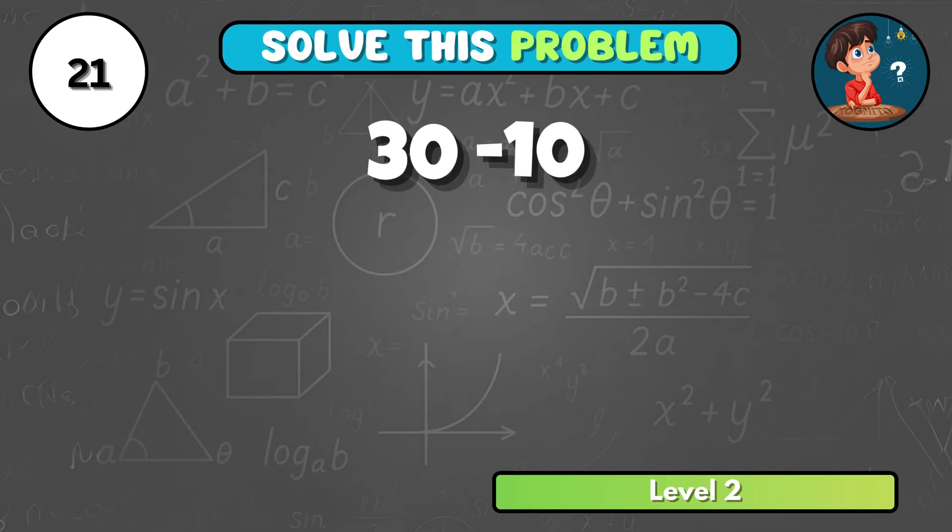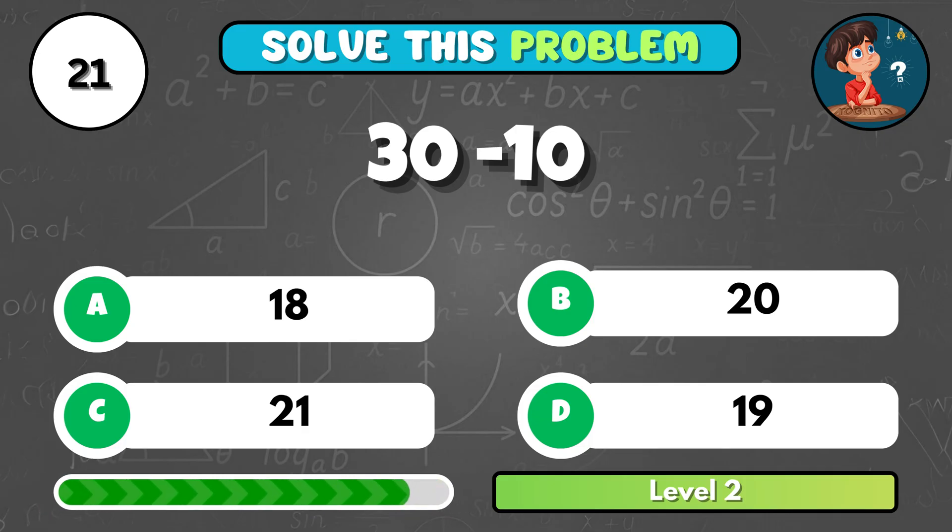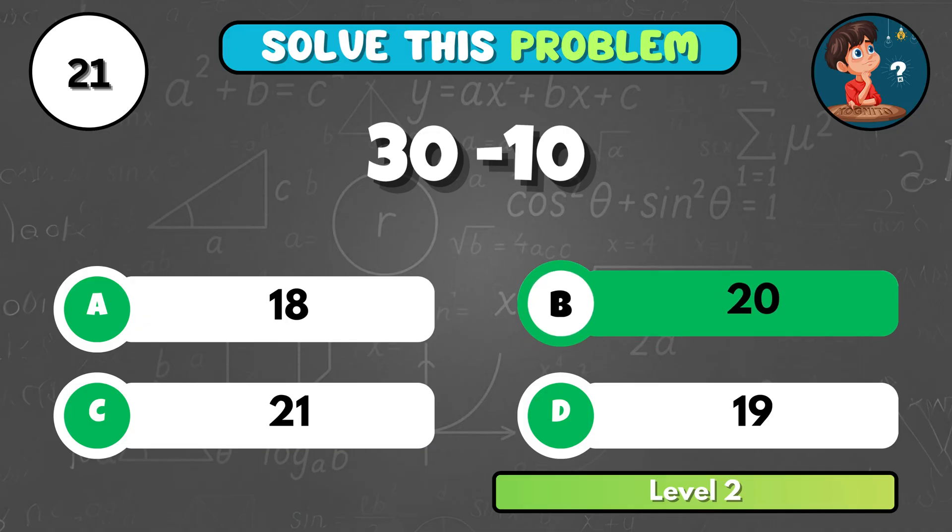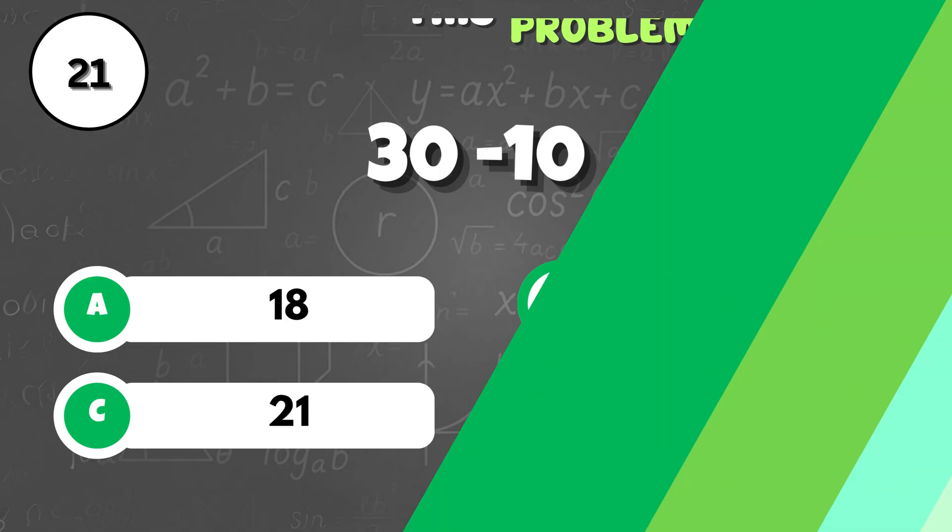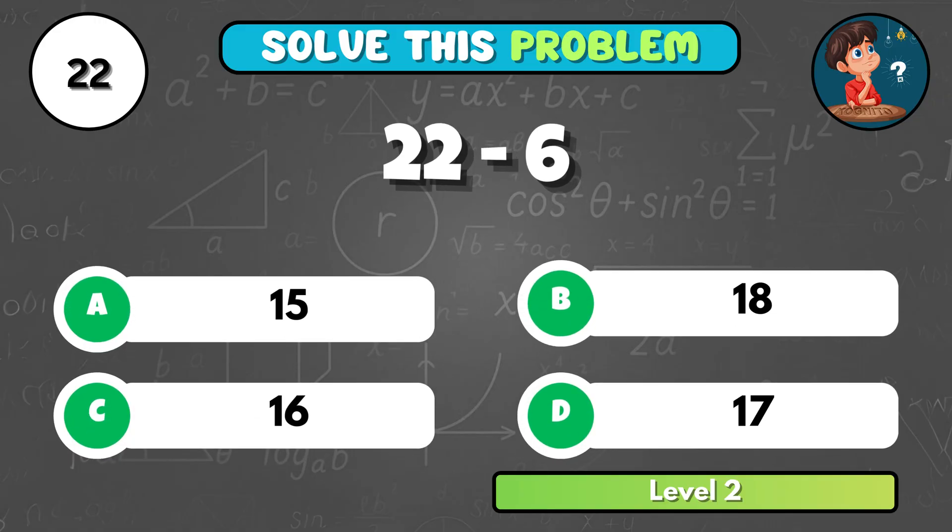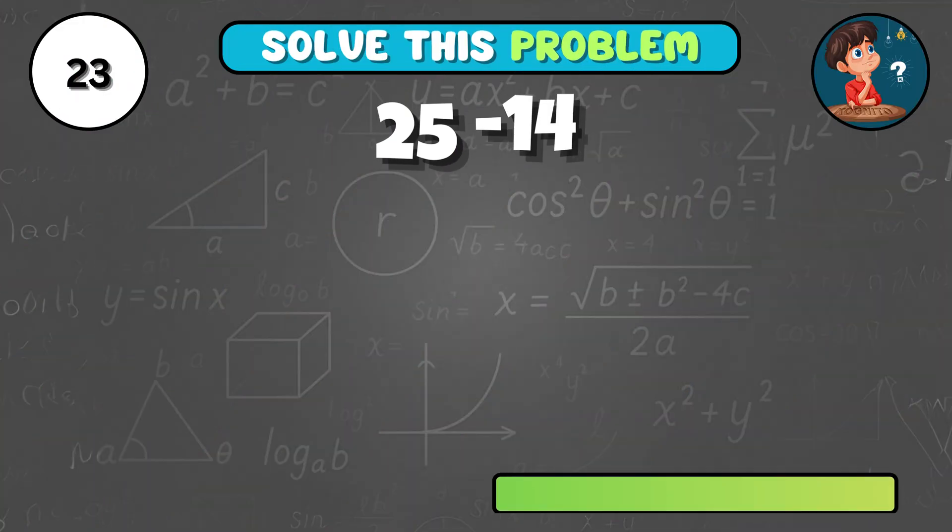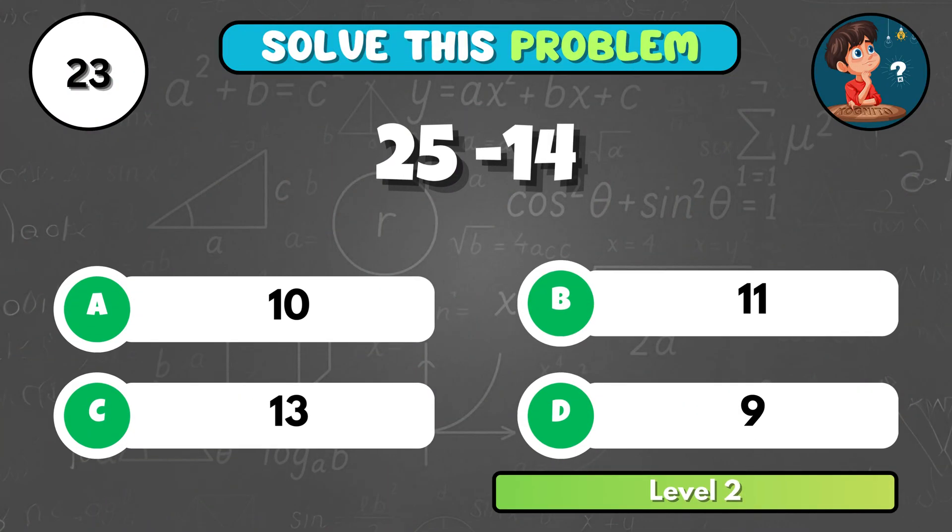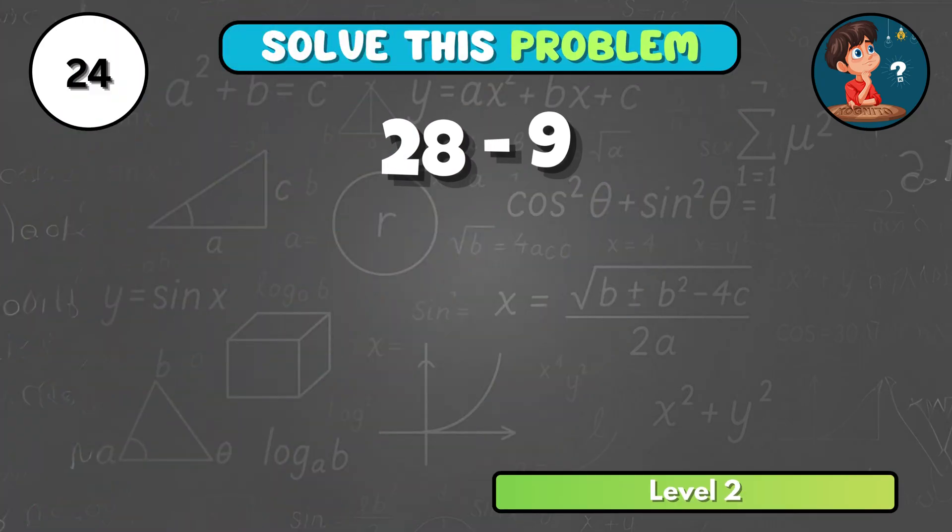Here's one more! 30 minus 10 is how much? That's B, 20! What's the answer if 22 minus 6? It comes to C, 16! Solve this one, 25 minus 14 gives you what? That's B, 11!